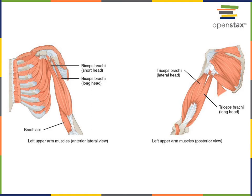Now we'll focus on the muscles that move the elbow joint on the anterior brachial region. The large superficial muscle is the biceps brachii. Biceps means two heads — there is a short head and a long head — and brachii refers to the brachial region. Biceps brachii is found on the anterior brachial region and performs the action of flexion, flexing the elbow joint.